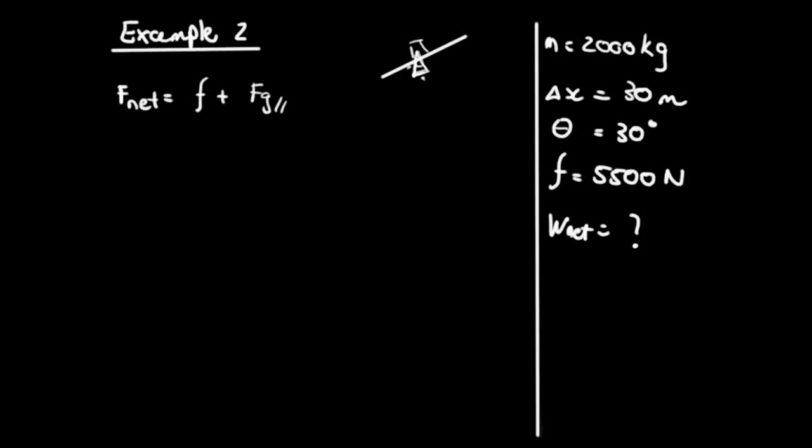Let's have a look at the solutions. I'm using Method 2 — calculating the net force first. The only two forces present here are the force of friction and the gravitational parallel component, FG parallel. There's no work done by the perpendicular component of gravity, and no work done by the normal force, because both are perpendicular to the motion. So we need to calculate FG parallel, because the object is free-falling down the plane.